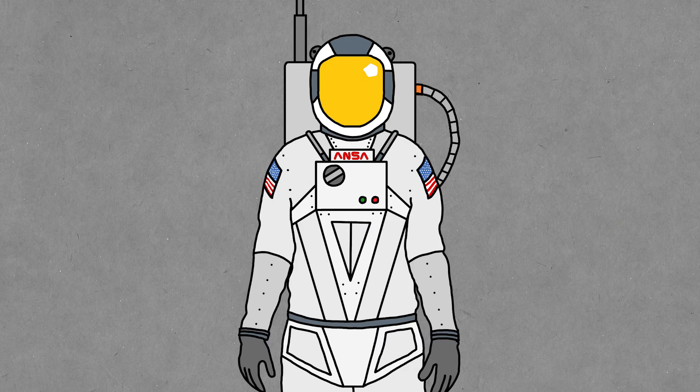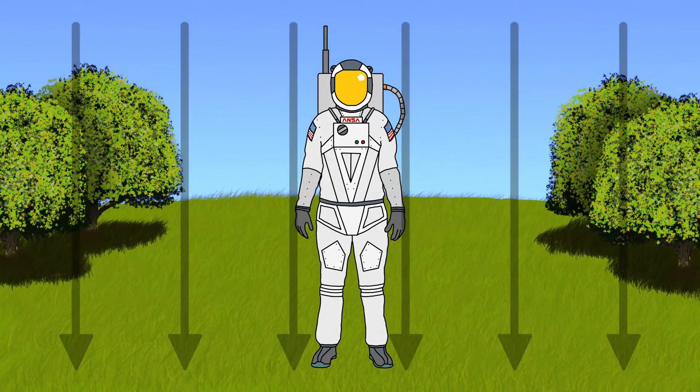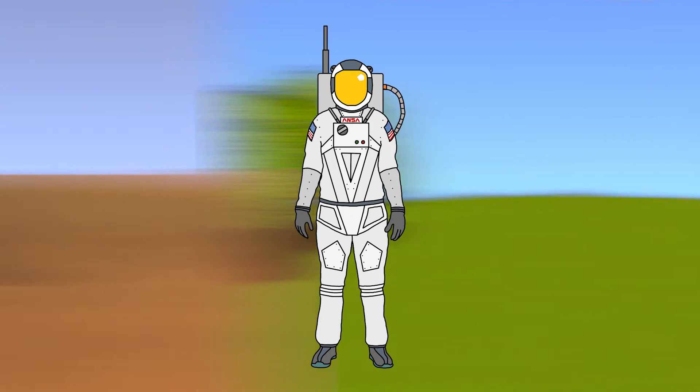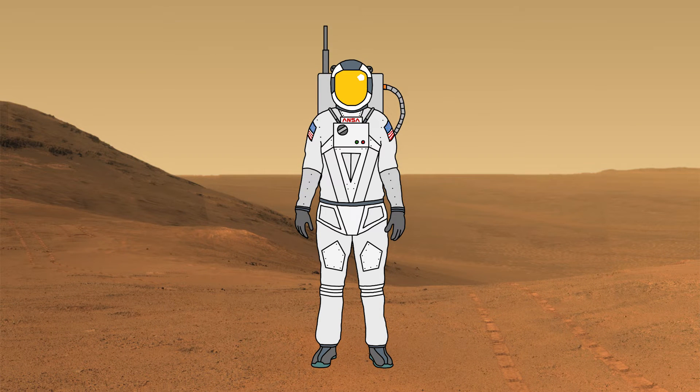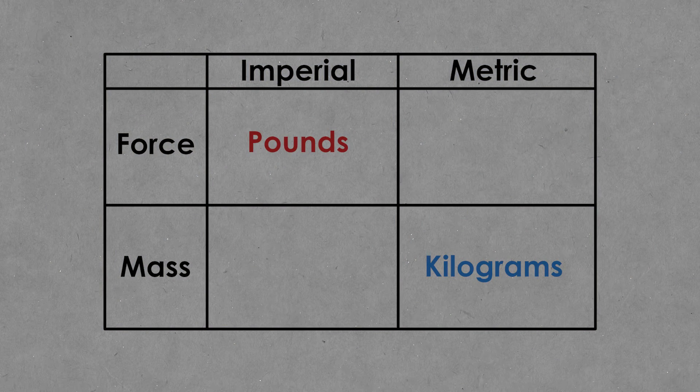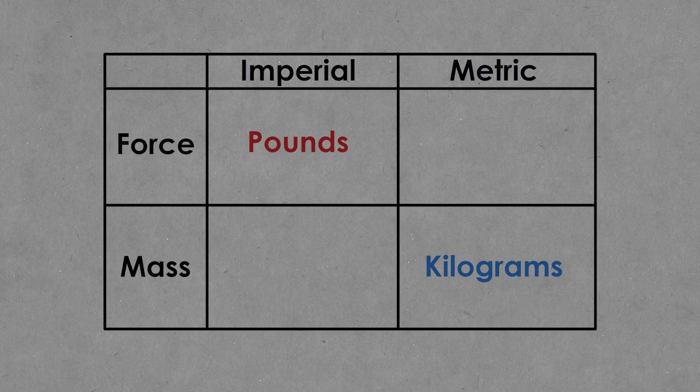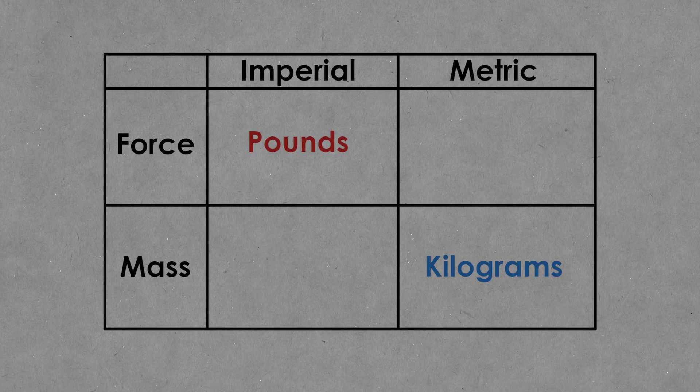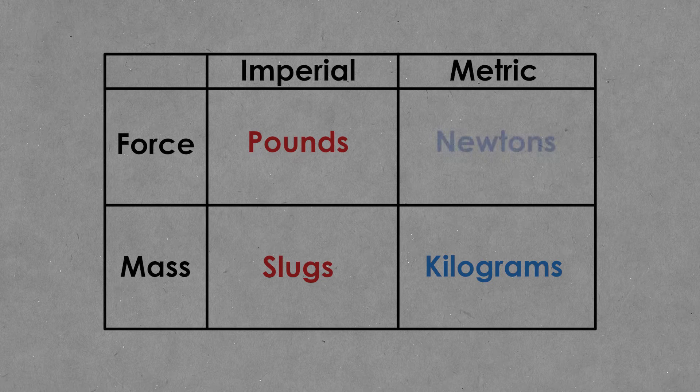If you visited Mars, you would actually weigh less, but you would still have the same mass. And this confusion also causes some problems when we're going between imperial and metric units, because pounds is actually a measure of force, while kilograms is a measure of mass. Mass in imperial is measured in slugs, and force in metric is actually described by newtons.